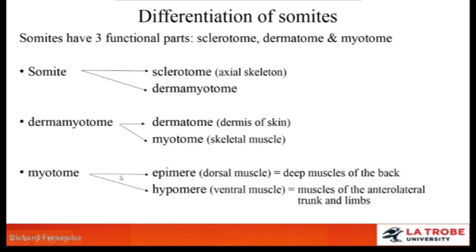Considering the myotome further, it will develop into the epimere, which is the dorsal muscle mass — specifically the deep muscles of the back, the erector spinae muscles. The hypomere is the ventral muscle mass, comprising all the muscles of the anterolateral trunk and the limbs. Examples include the pectoralis major, the intercostal muscles, the anterolateral abdominal wall muscles, and the muscles of the limb.